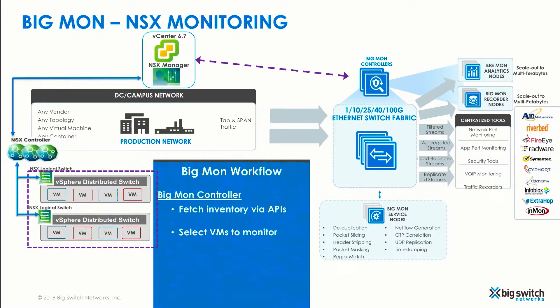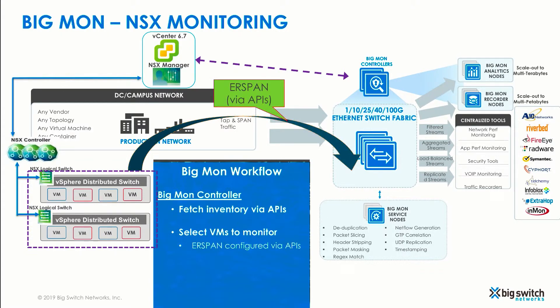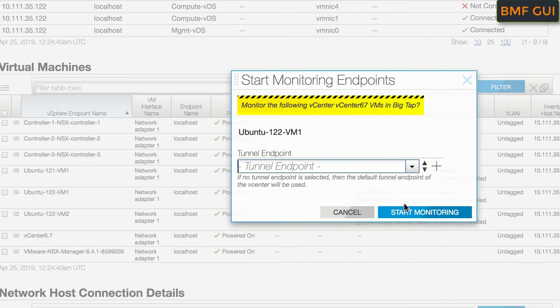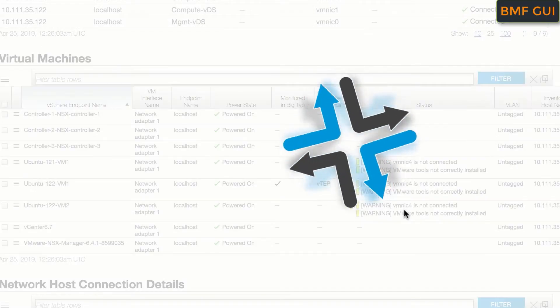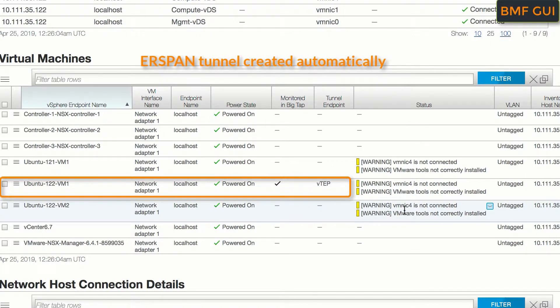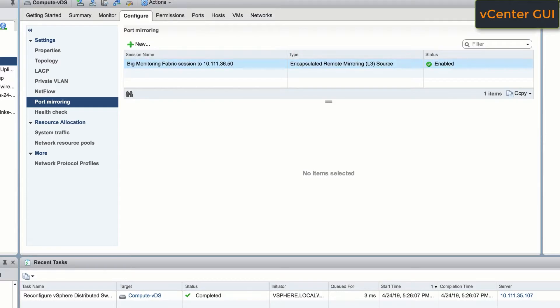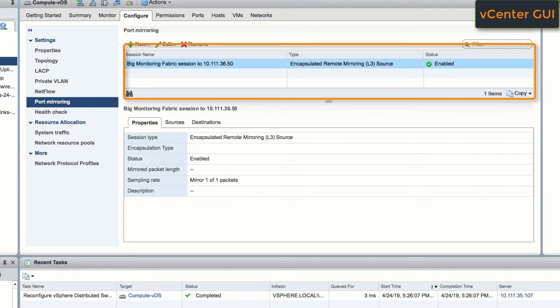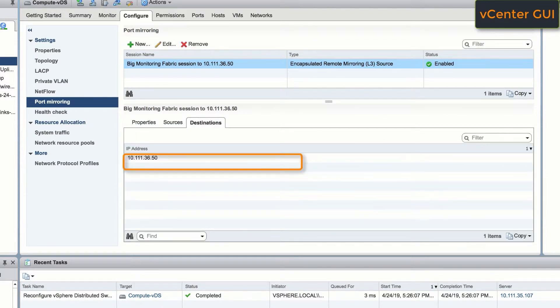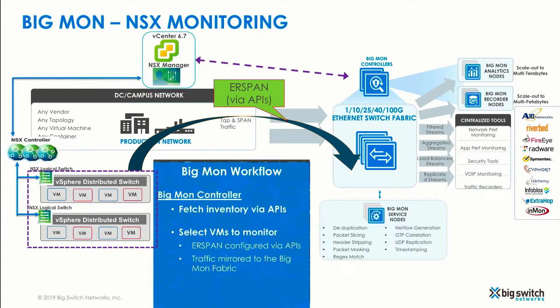Once the user has selected the VM to be monitored, the BigMon controller programs the ERSPAN session via VMware API. The ERSPAN tunnel is then terminated on the BigMon fabric. Now we will go back to the BigMon vCenter integration page and select a VM for monitoring. We can see that the selected VM is now being monitored. The ERSPAN tunnel is automatically created by the BigMon controller via VMware API. Going back to vCenter, we see that a port mirror has been created and the source and destination for ERSPAN have been populated. Since BigMon controller keeps track of the inventory, a VM migrating to another host with vMotion can still be monitored.